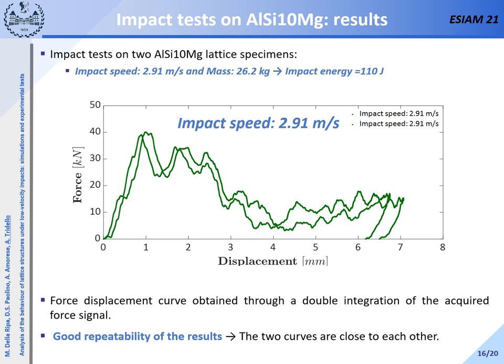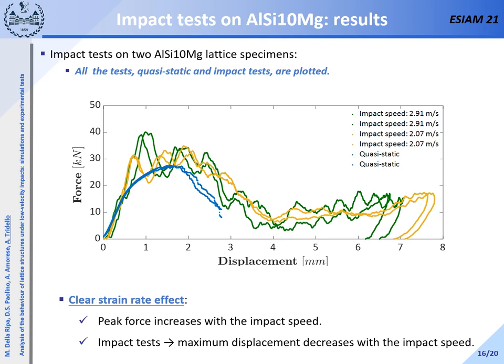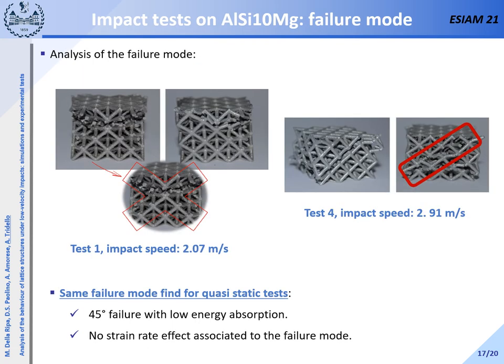The force-displacement curves of the impact test carried out at about 3 m/s are also shown, and even in this case the two curves are close to each other. More interesting is the graph plotting the force-displacement curves for both quasi-static and impact tests. According to the figure, a strain rate effect is clear, with the maximum force increasing with impact speed. Moreover, for the impact tests the maximum displacement decreases with impact speed. This effect must be taken into account when simulating the impact test. Also in this case, failure occurs at 45 degrees with limited energy absorption, and no strain rate effect associated with the failure mode was experimentally observed.